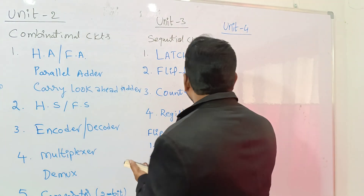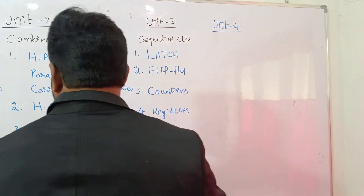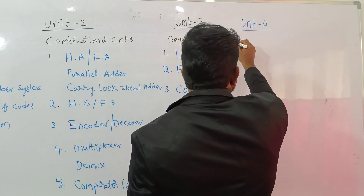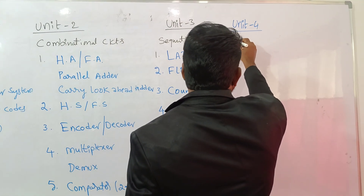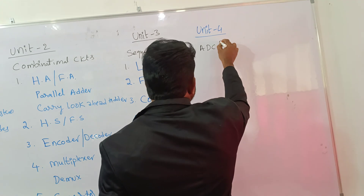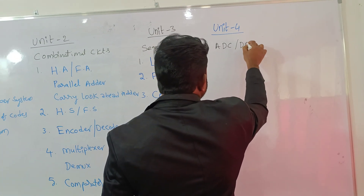Unit four is of two types, as I mentioned. The first topic is ADC and DAC — analog to digital converter and digital to analog converter.